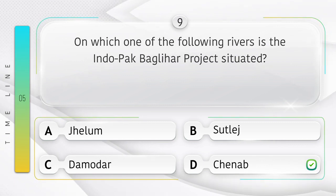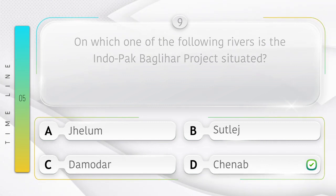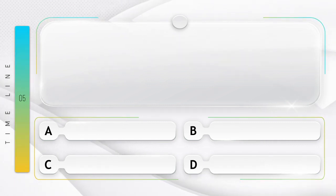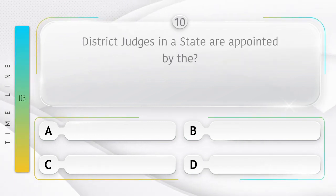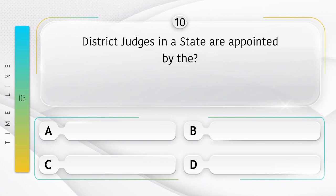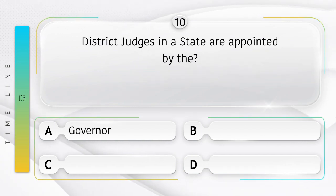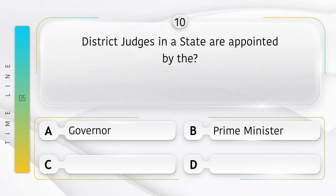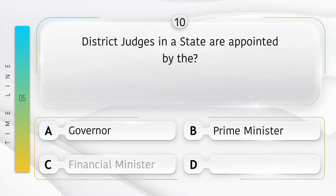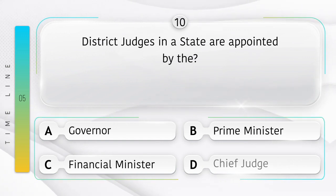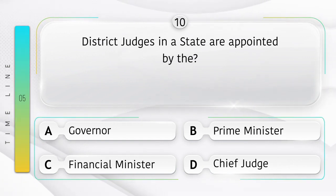District judges in a state are appointed by: option A: Governor, B: Prime Minister, C: Financial Minister, D: Chief Judge. Answer is option A, Governor.